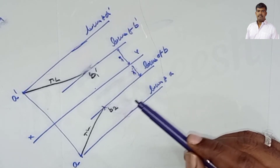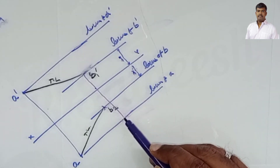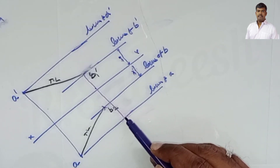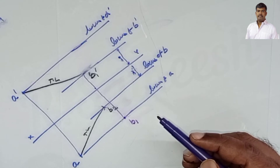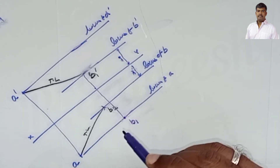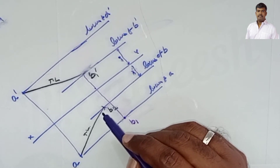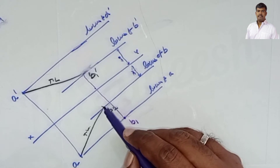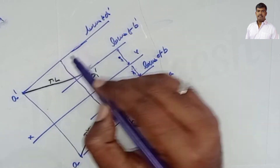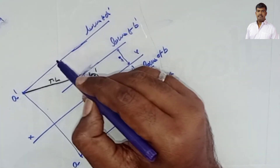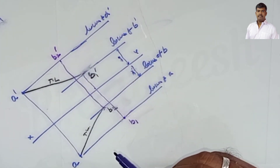This also uses the same true length of 60mm. Then draw one vertical line from B1-dash up to the locus of A - that gives the top view point B1. From B2 draw one vertical line up to the locus of A-dash - this gives B2-dash, the front view point.